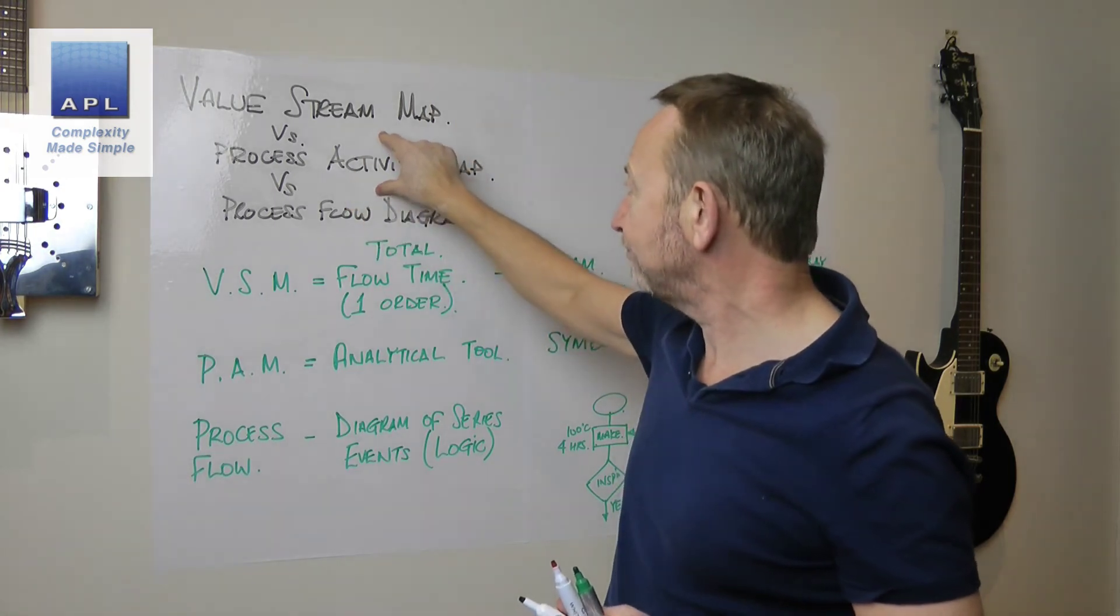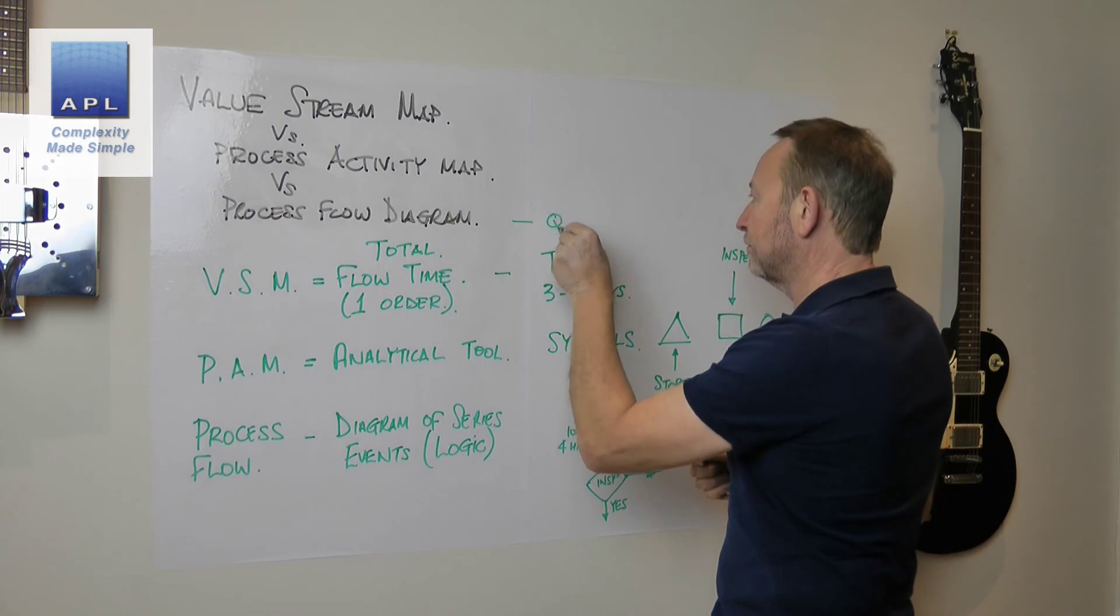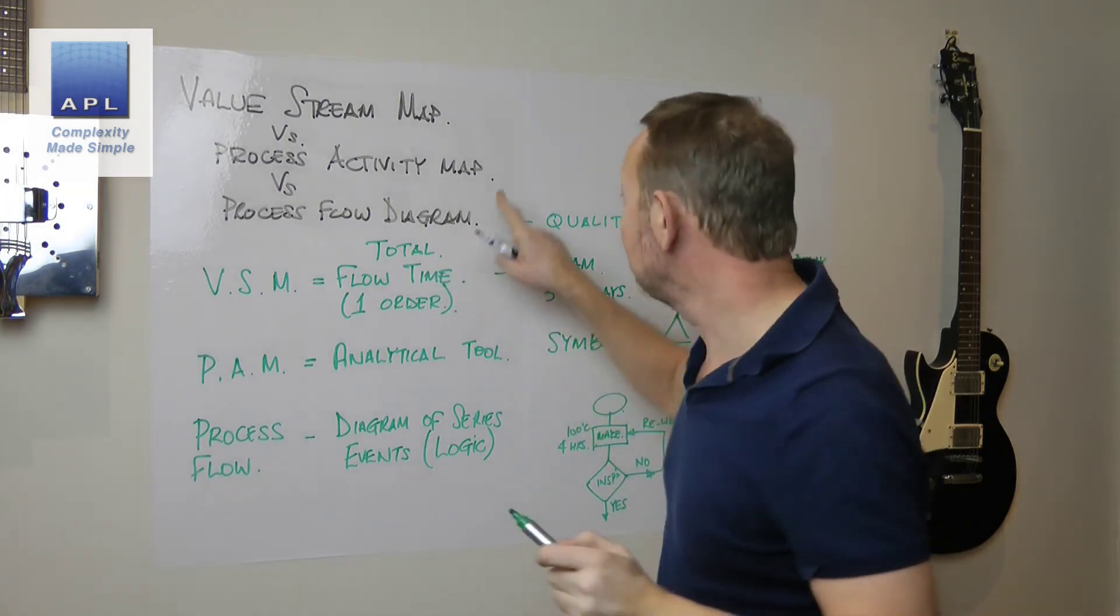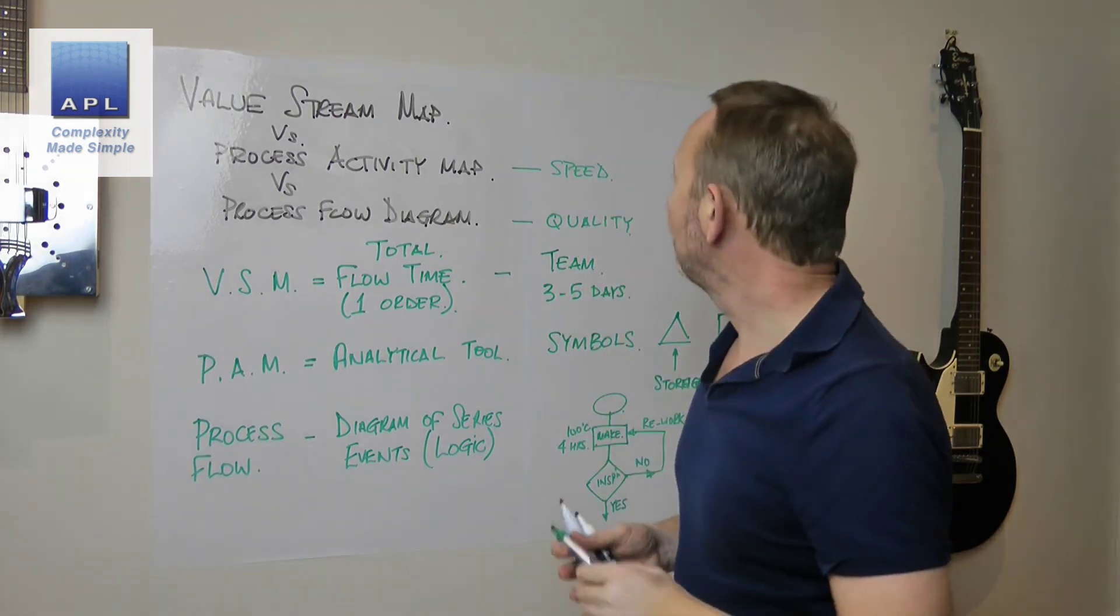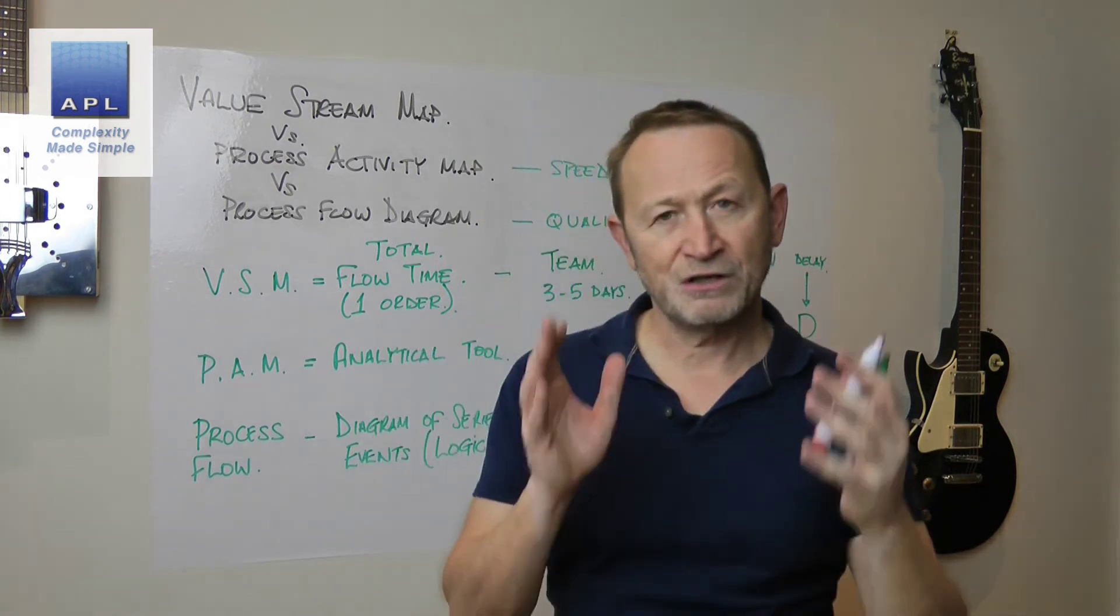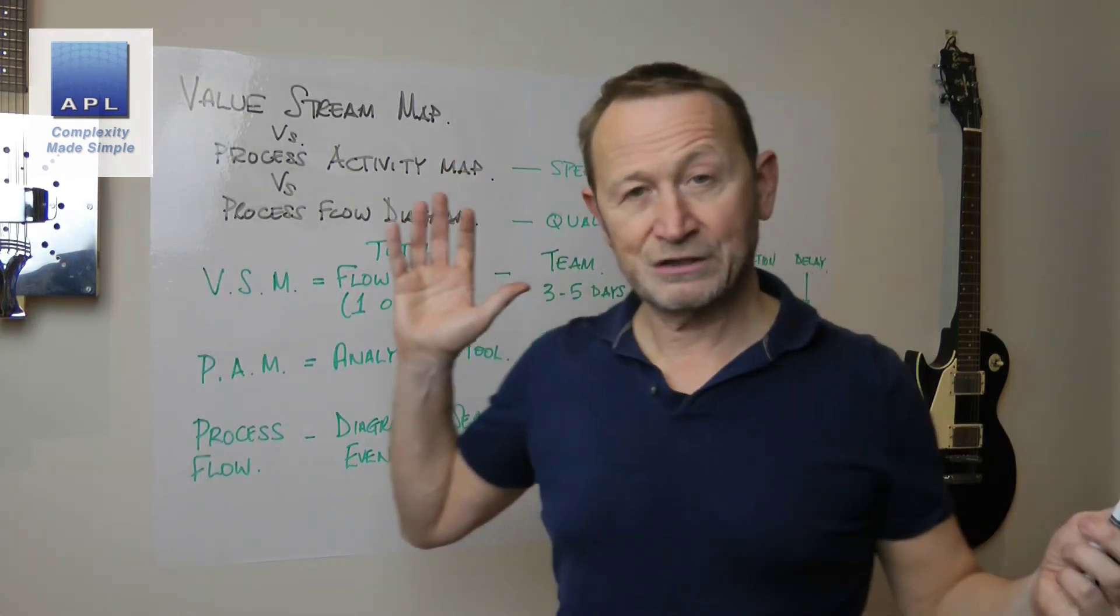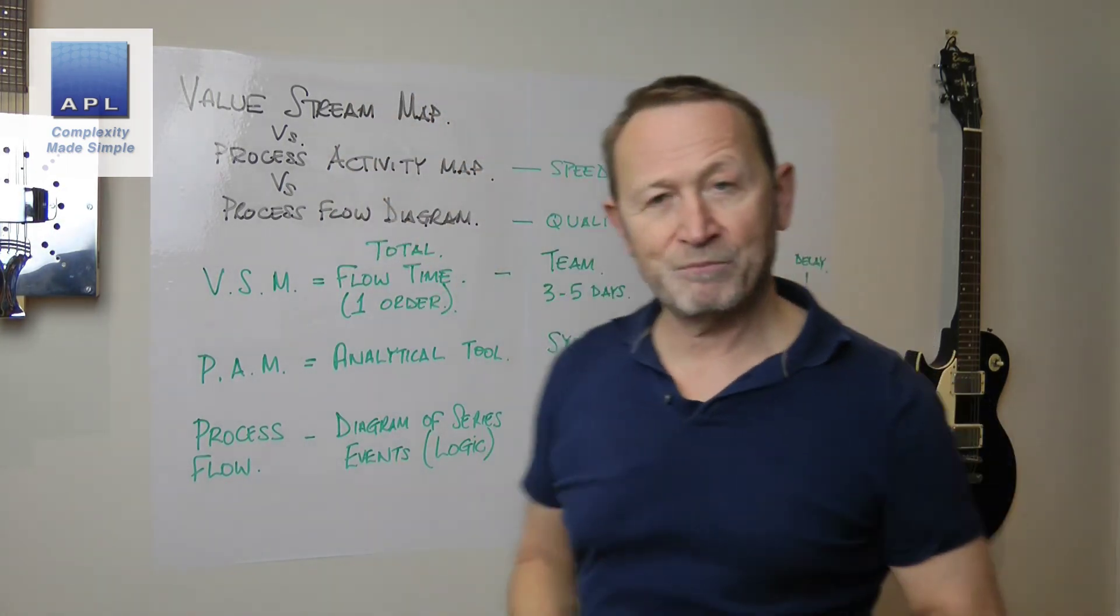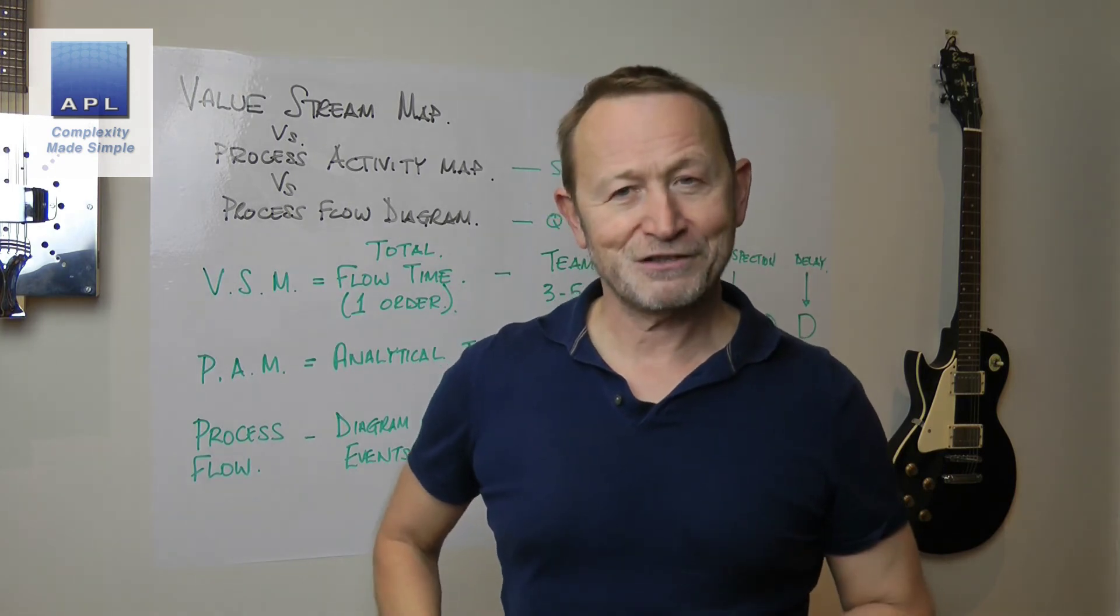Once you've done the value stream map and you know your priority to improve, then you can move in and say, what is it that I need to improve? If I'm going to improve quality, I would probably use the flow diagram as part of my toolkit. If I want to improve speed or cost, I'm probably going to use the process activity map. But they are different tools at different times. They're all diagnostic analytical tools. This is a big picture, these two are detailed, and they are based on the problem that you've got in front of you.